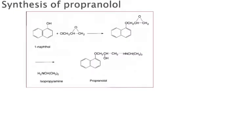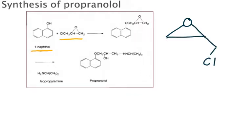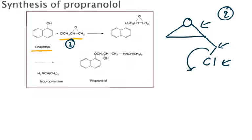The synthesis of propranolol starts with 1-naphthol. To this is added chloromethyl oxirane — a three-membered ring with an oxygen heteroatom is oxirane, and with a chloromethyl group attached it is chloromethyl oxirane. The chlorine is a good leaving group. A base (KOH) is used, which removes a hydrogen as a proton; that proton combines with the leaving chlorine and exits as HCl.